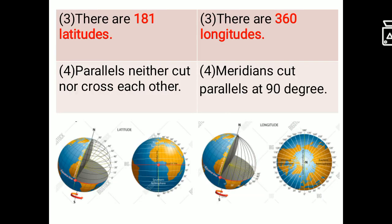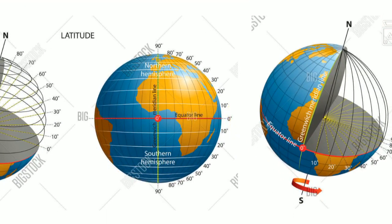Third, there are 181 latitudes. Let me tell you how. In this figure you can see that in the northern hemisphere there are 90 latitudes.